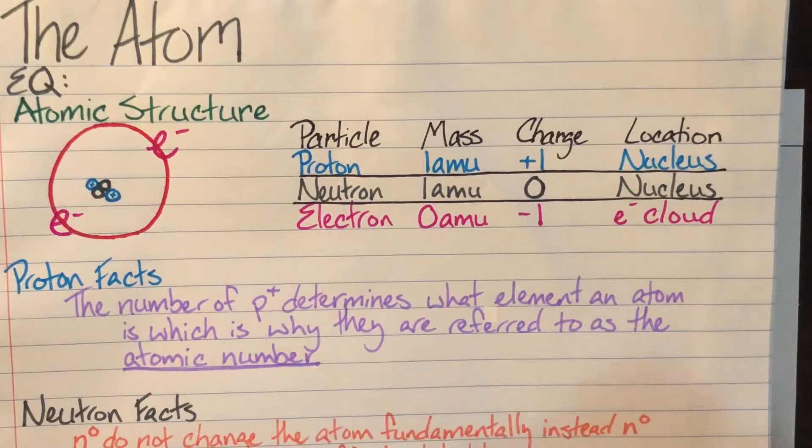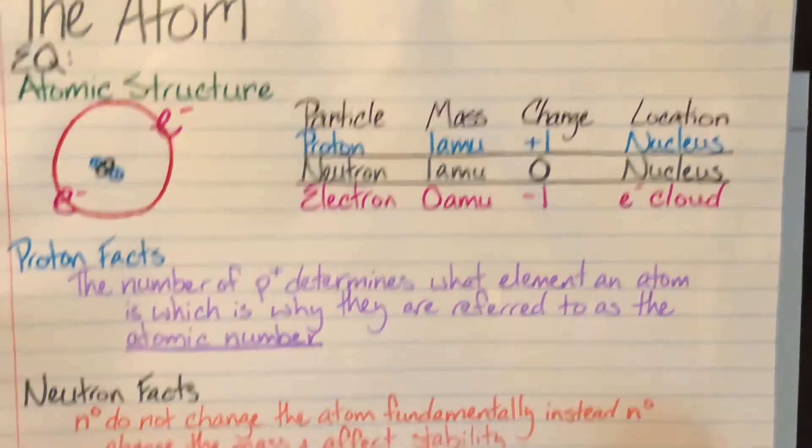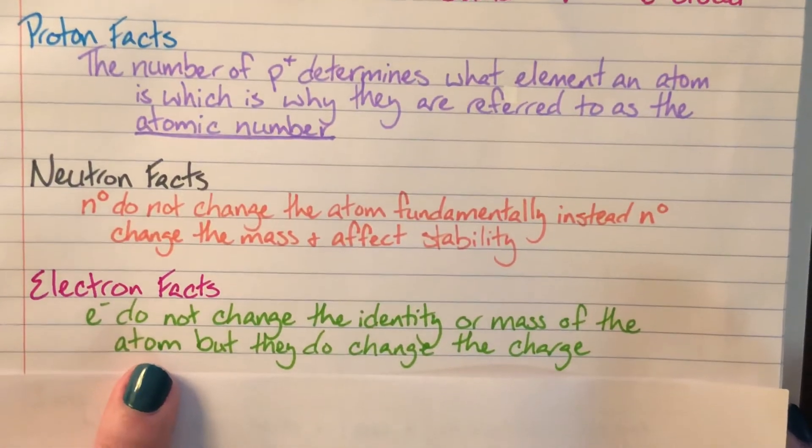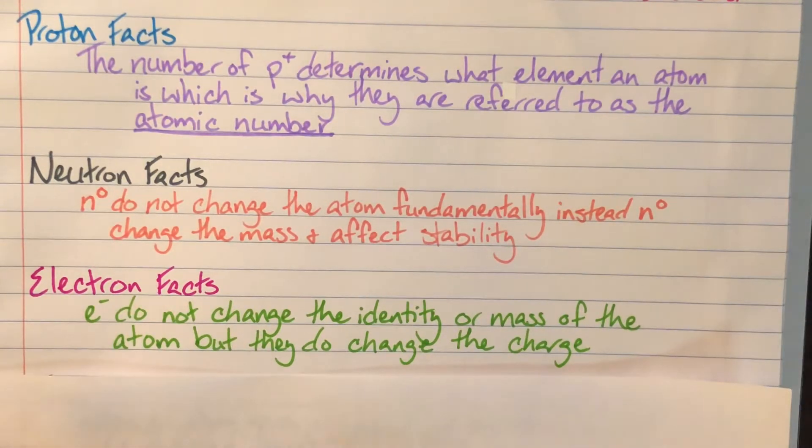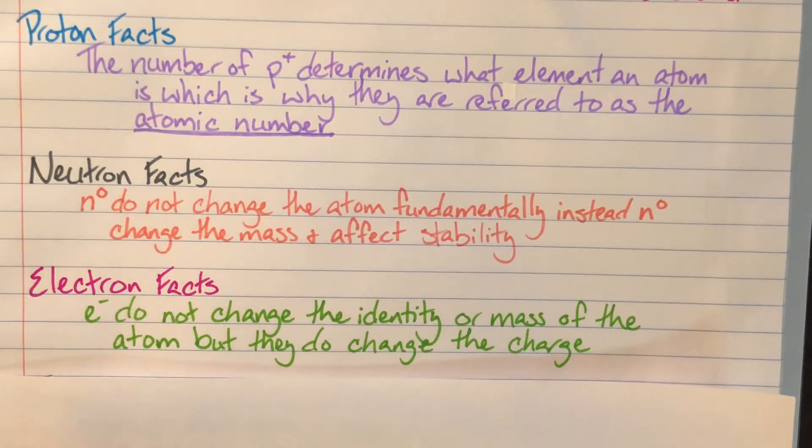Electrons just change the charge. They don't change the mass of the atom. Remember that electrons have a mass of zero, so they cannot change the mass of the atom. But they can change the charge of that atom. The negative of the electron and the positive of the proton in the neutral atom balance out, meaning that I have the same number of protons as I do electrons so that my electrical charge is zero. If I start gaining electrons, then I will change my charge to a negative. And if I start losing electrons, I will change my charge to a positive.